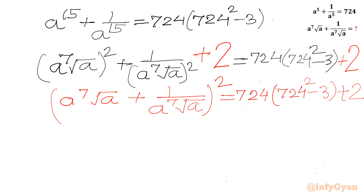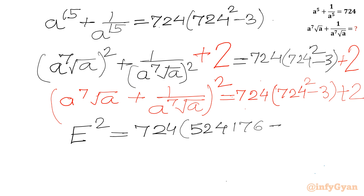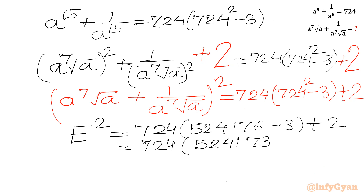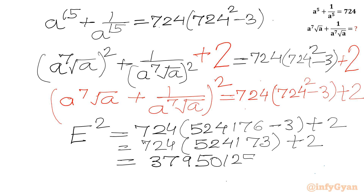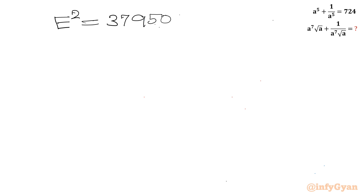So E² = 724·(724² − 3) + 2. Computing 724² = 524,176, so 524,176 − 3 = 524,173. Then 724·524,173 + 2 = 379,501,252 + 2 = 379,501,254.